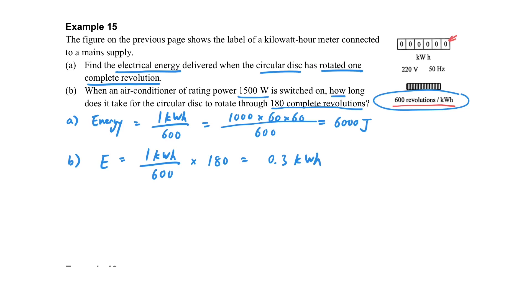Once again, because we know that one turn is one kilowatt-hour over 600, and now we have 180 turns, we can use this approach. We have just found the amount of energy involved. We can use P equals E over t, so we can find the time required for the air conditioner to use this amount of energy.